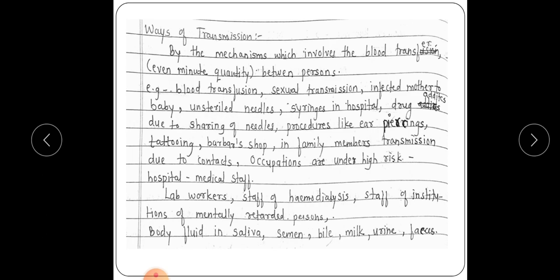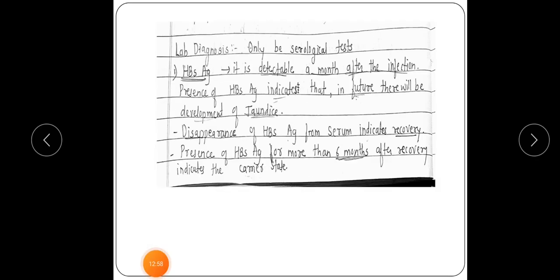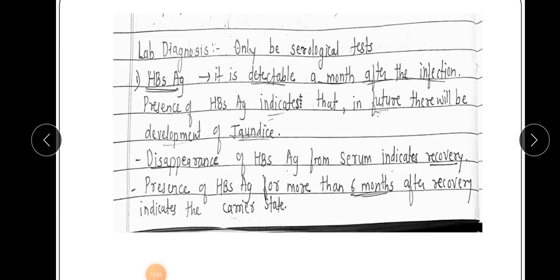Wherever there is a chance of even a very small quantity of blood transmission, that may lead to infection. Lab workers, staff of haemodialysis units, and staff of institutions for mentally disabled persons are also at risk, as they may be exposed to blood unknowingly. Additionally, body fluids such as saliva, semen, bile, milk, urine, and feces are also ways of transmission.